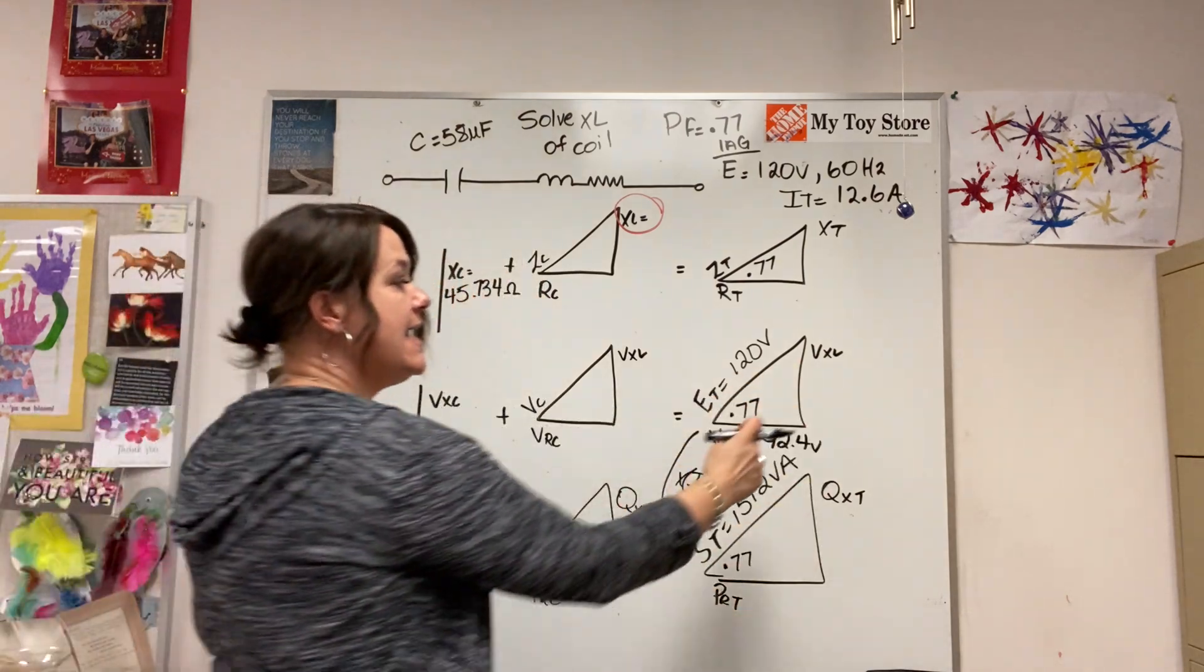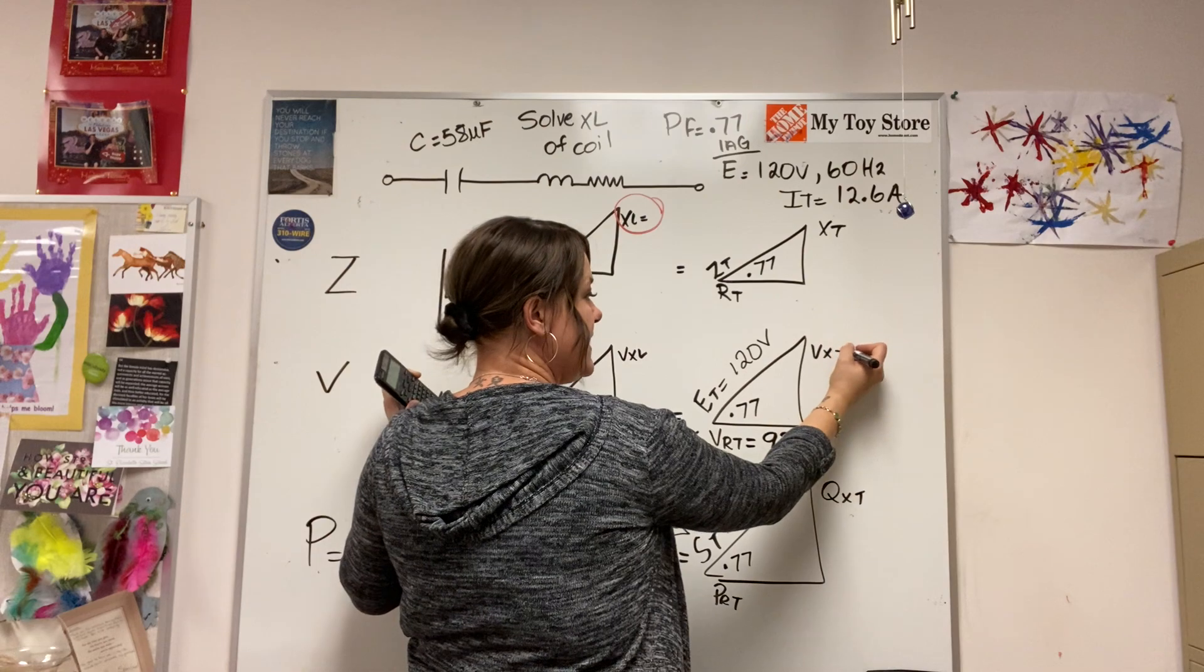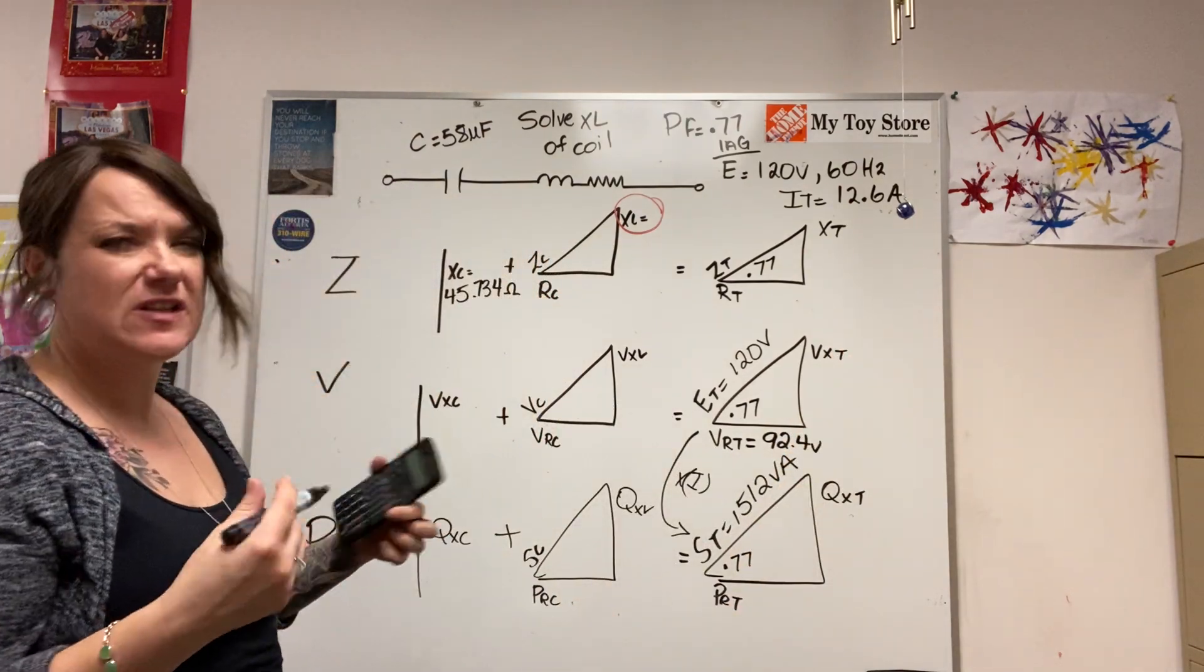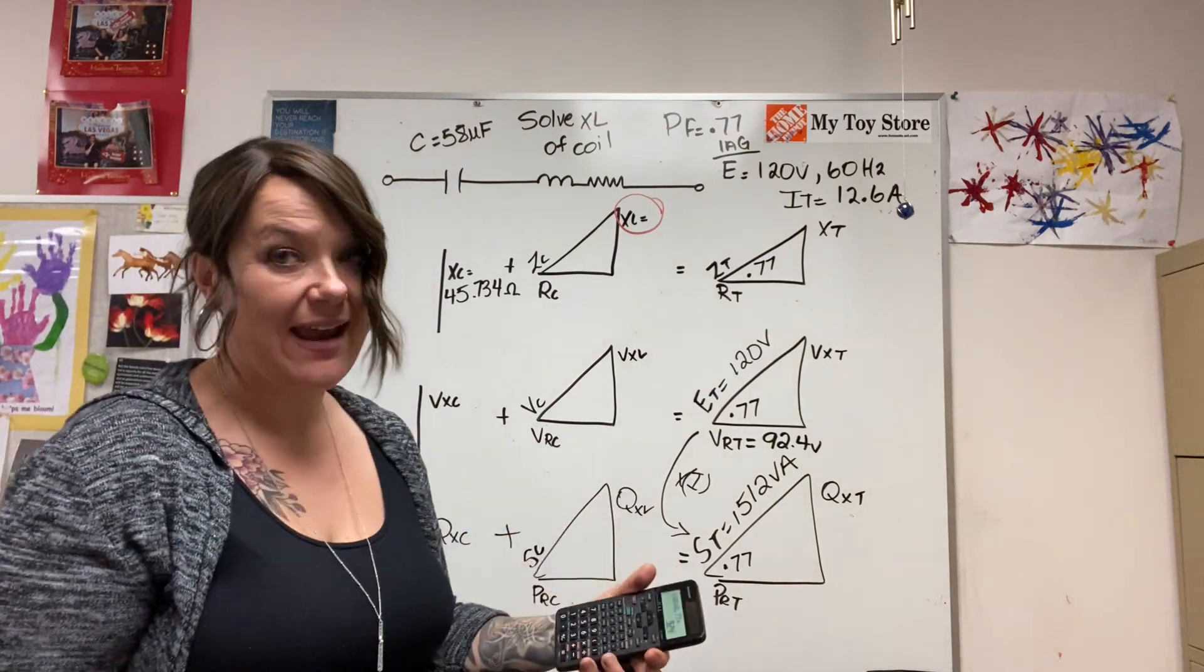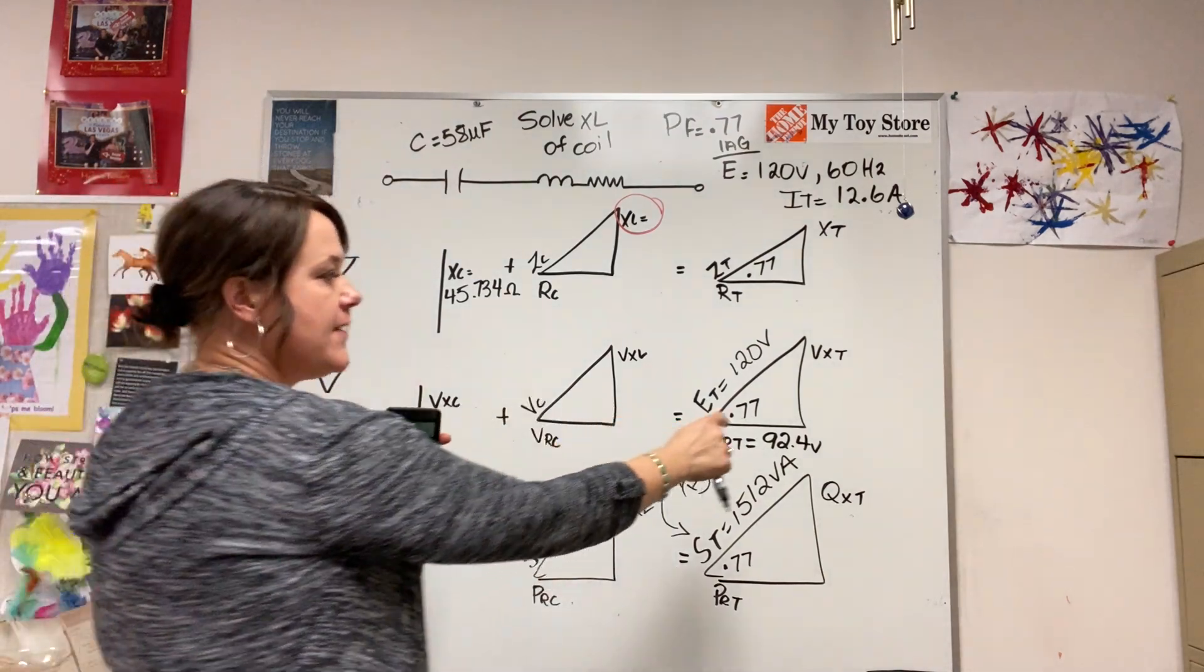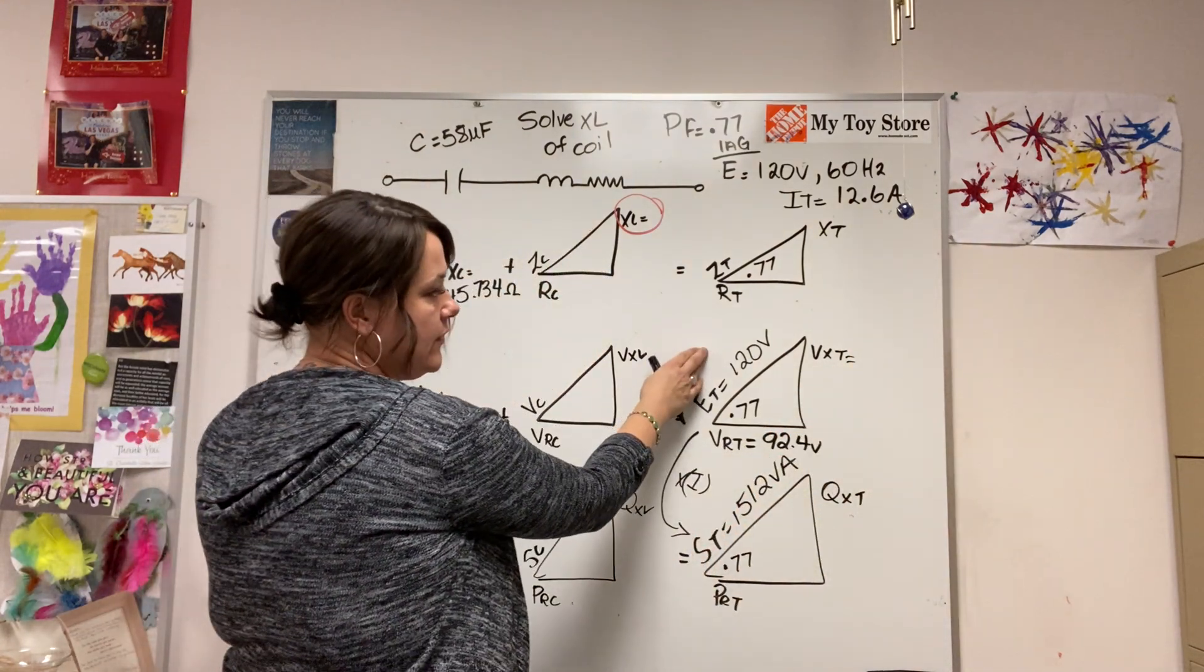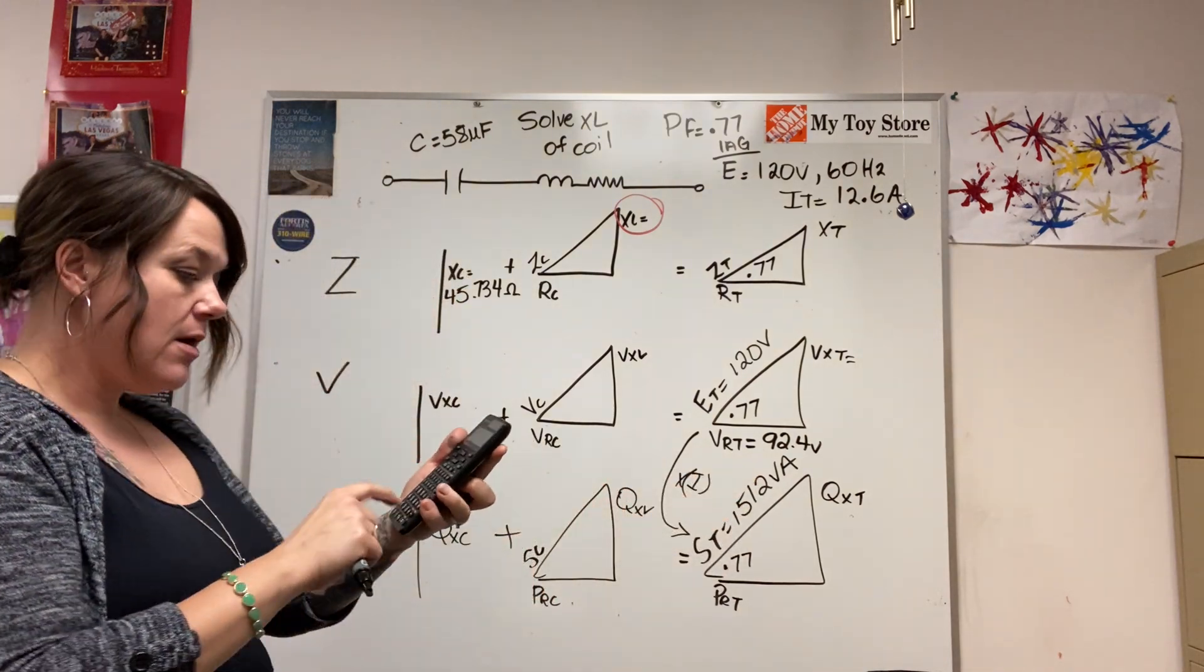And then if I want my V - I got XL wrote down - it's VXT because that is the net reactance between, right? So it's more correct to say VXT there, even though we know it's lagging. So I want to figure out what my VXT is, so I'm going to use my Pythagorean theorem: 120 volts squared subtract 92.4 volts squared.